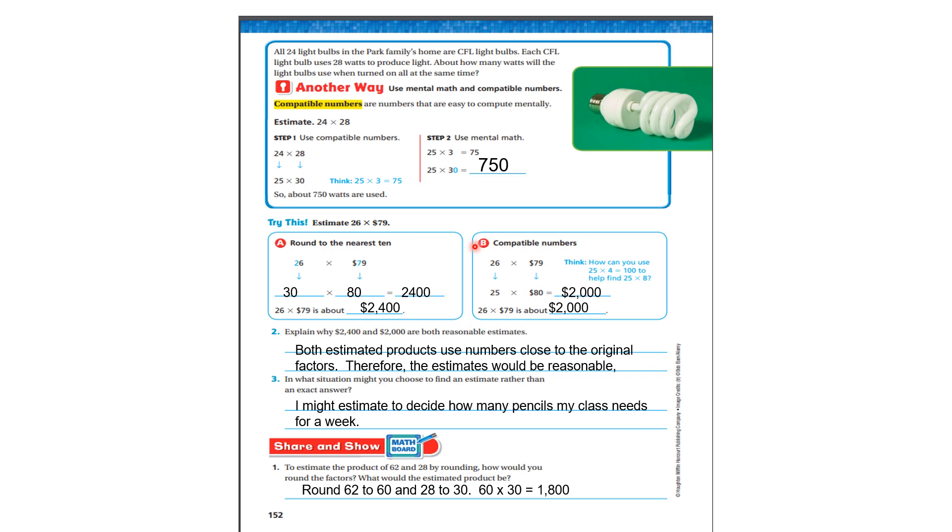Now let's use compatible numbers. Remember, compatible numbers usually end in 5 and 0 because they're easier to do mentally. 26 is compatible with 25 and 79 is compatible to 80. Now, how can you use 25 times 4 equals 100 to help find 25 times 8? Well, 4 is half of 8. So we would double it. It would be 200. So 25 times 80 is 2,000. 26 times 79 is about 2,000.